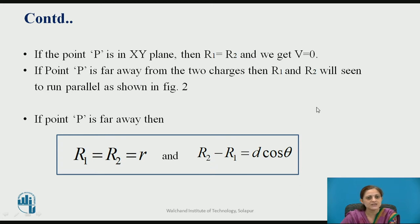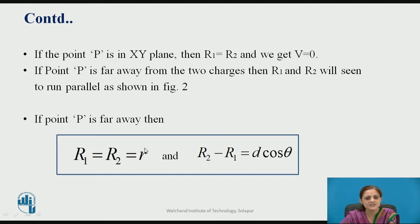If point P is in the xy-plane, then R1 equals R2 and therefore the potential equals zero. If point P is far away from the two charges, then R1 and R2 are seen to run parallel, as shown in figure 2. In that case, R1 and R2 are both approximately equal to small r (the distance from the center of the dipole), and the difference R2 minus R1 equals d cos theta.